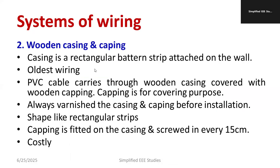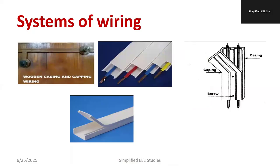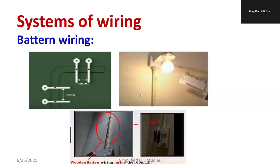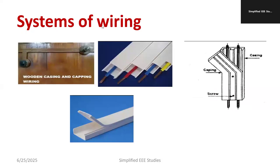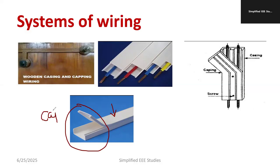Similar to batten wiring, we have wooden casing and caping wiring. Casing is a rectangular batten strip attached on the board, with an opening — that's a specialty. In batten wiring there is no provision to open for maintenance, but wooden casing and caping provides that facility. It is the oldest type of wiring, used in old buildings and palaces. The PVC cable carries through the wooden casing, covered with the wooden caping.